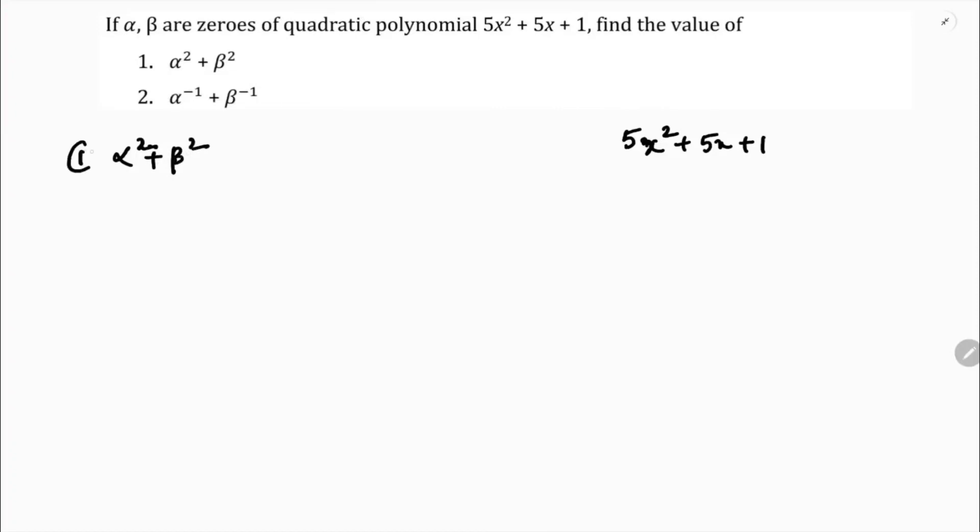So this is the first question here. Now, to split the middle term, 5 times 1 is 5, so 1 and 5 are the factors. It is not possible to split directly by prime factorization. So we will use the algebraic identity, alpha square plus beta square.